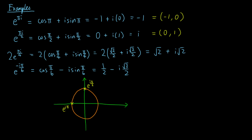Thirdly, 2 times e to the πi/4 has a distance of 2 from the origin and makes an angle of π/4 to the real axis, lying at twice the radius of the unit circle. Lastly, e to the −πi/6 lies on the unit circle and makes an angle of π/6 below the real axis.